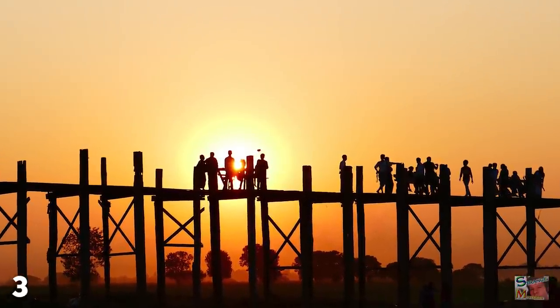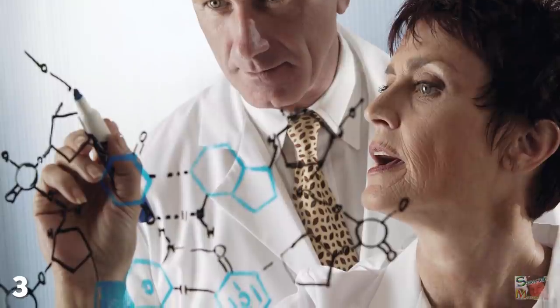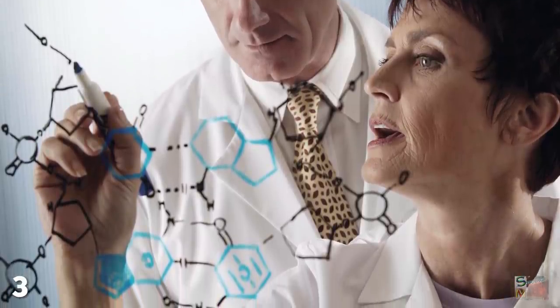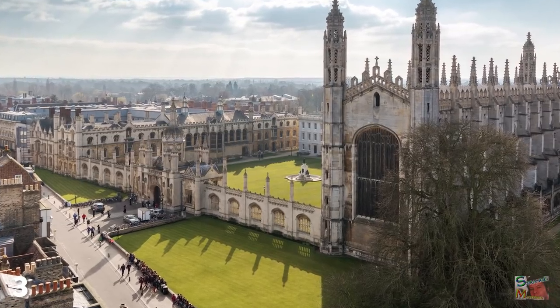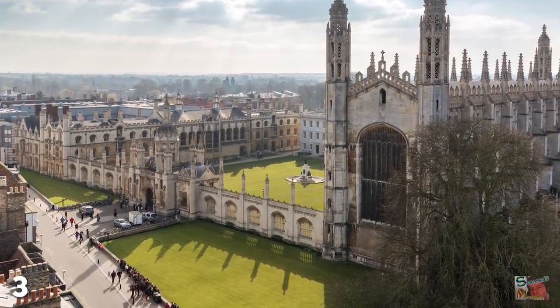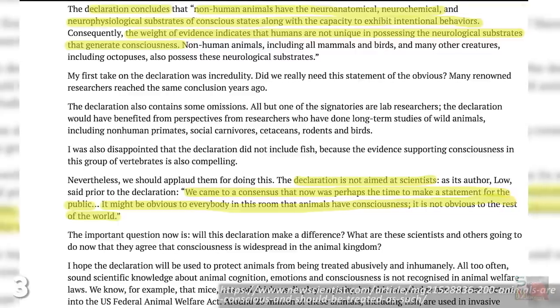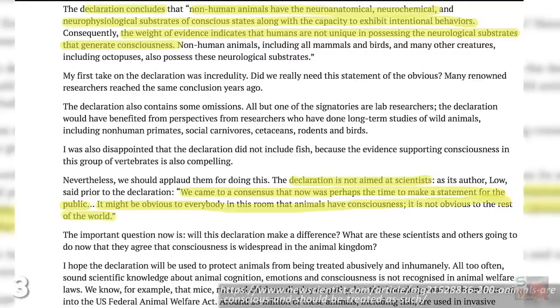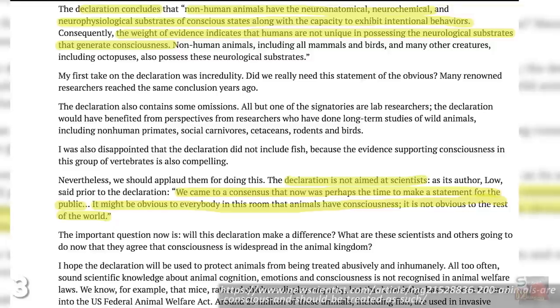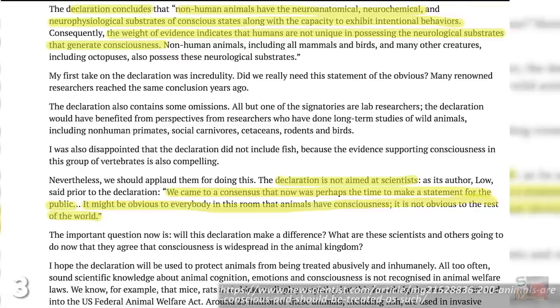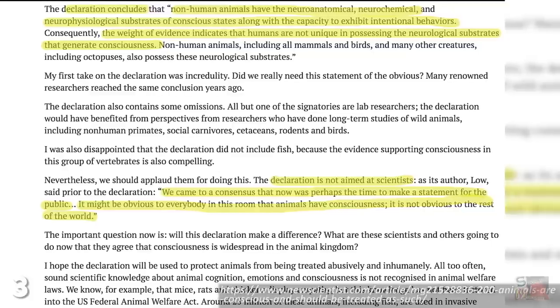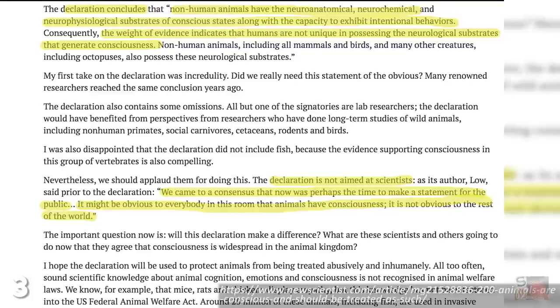In 2012, a group of leading scientists from various fields of neuroscience gathered at Cambridge University to sign a document called the Cambridge Declaration. The following statement is an extract from that document: "We decided to reach a consensus and make a statement directed to the public that is not scientific. It's obvious to everyone in this room that animals have consciousness, but it is not obvious to the rest of the world."